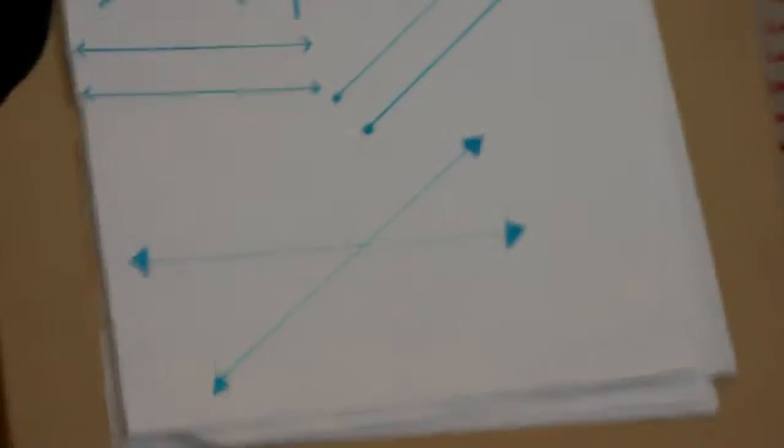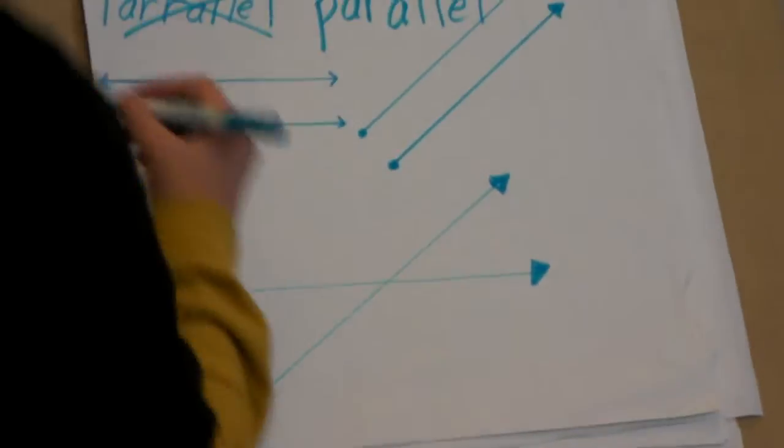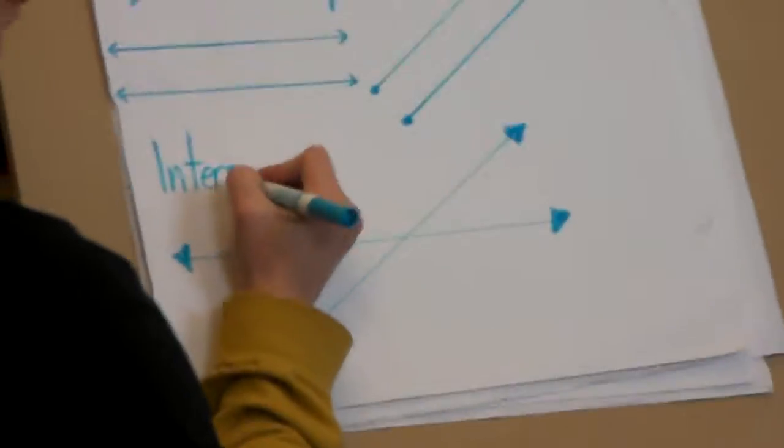What sort of lines are these? Oh, four of you know, yes. Yes, these lines intersect. They are called intersecting.